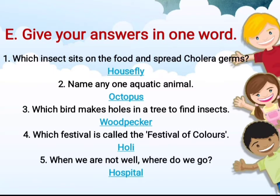The next one: name any one aquatic animal. You can write any one aquatic animal. One of the examples can be octopus. The spelling is O-C-T-O-P-U-S, octopus.